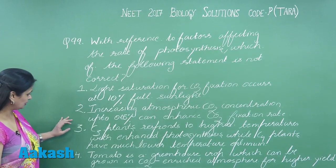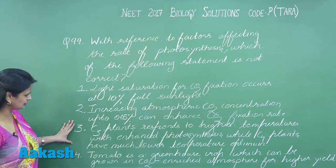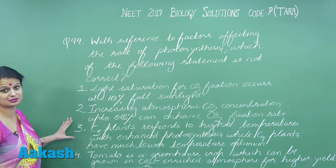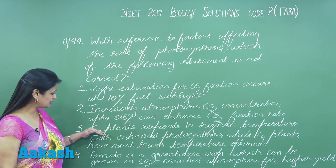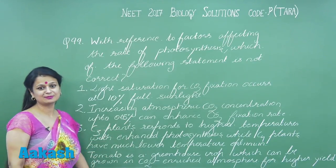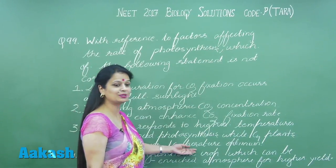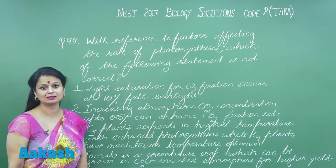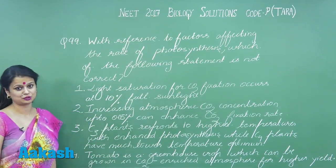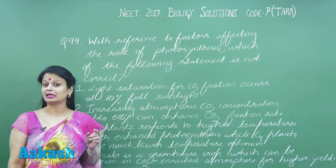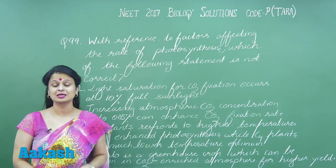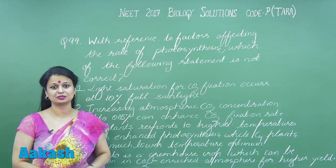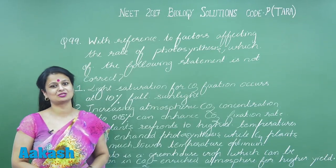The third option states that C3 plants respond to higher temperature with enhanced photosynthesis — this is a wrong statement. For C3 plants, maximum photosynthesis occurs at lower temperature optima, while for C4 plants it occurs at higher temperature optima. In C4 plants, an enzyme called PEP synthetase, involved in the synthesis of phosphoenolpyruvate, gets inactivated at lower temperatures.